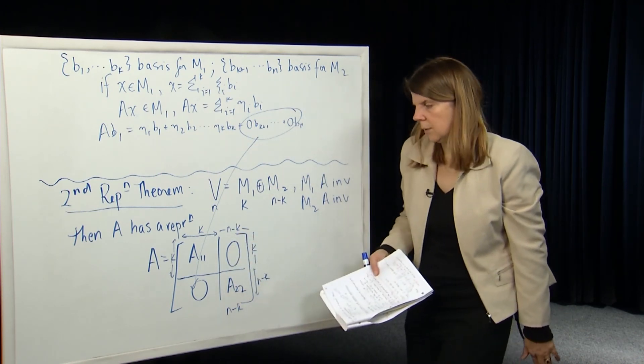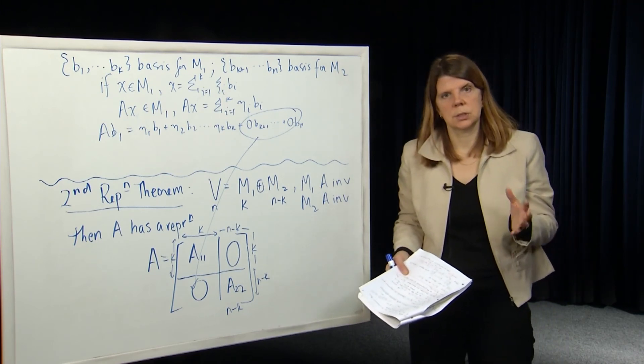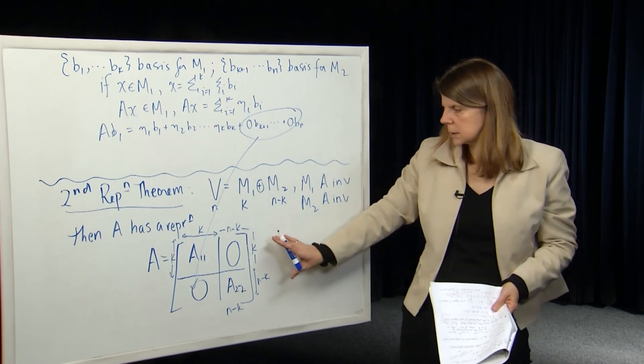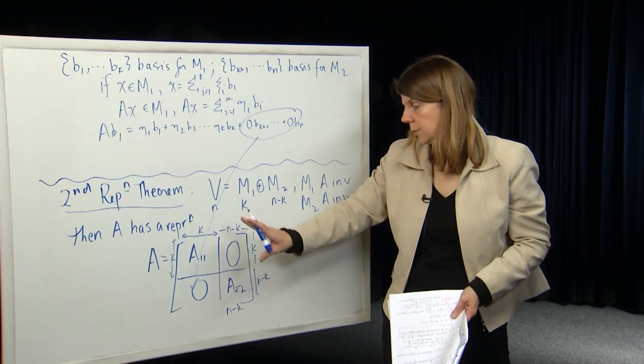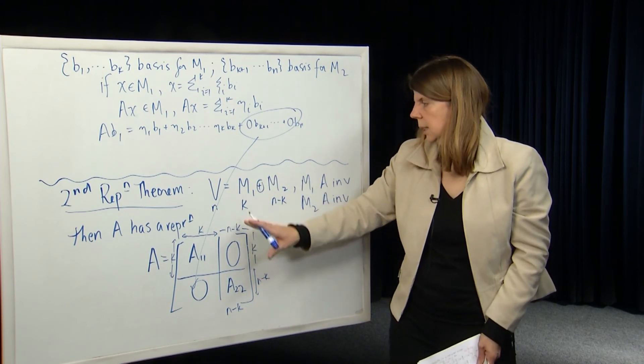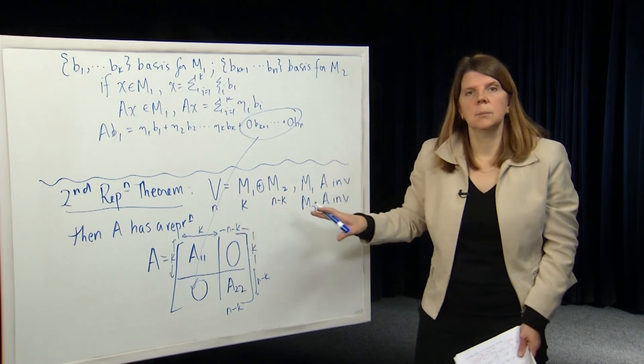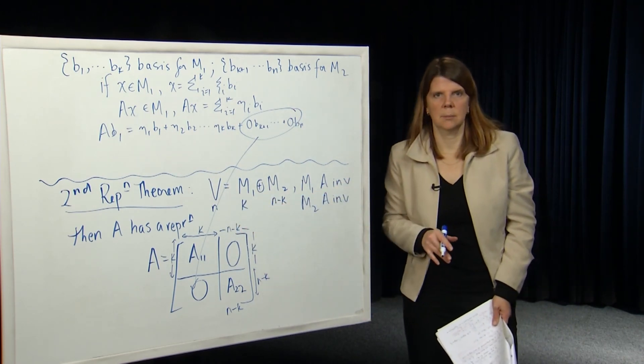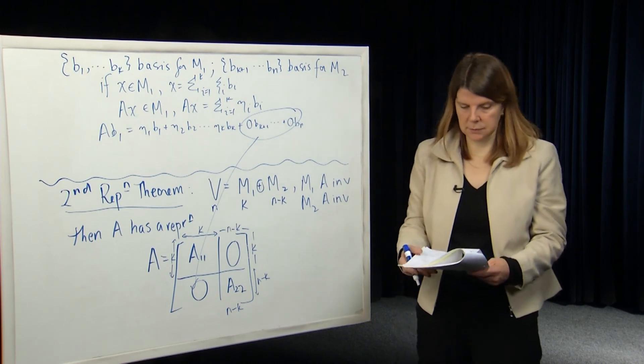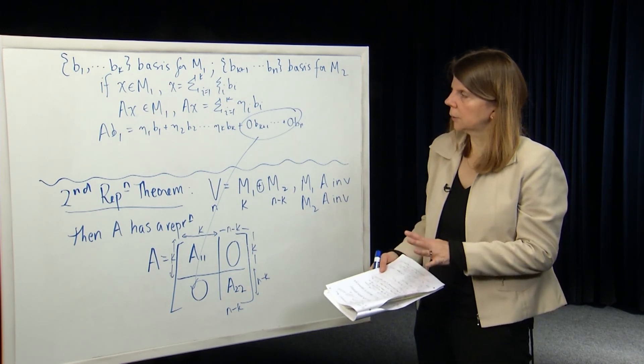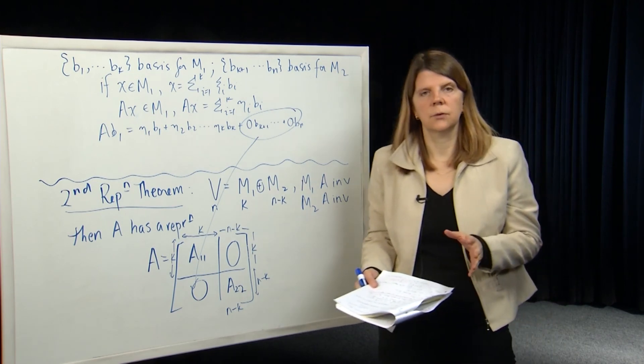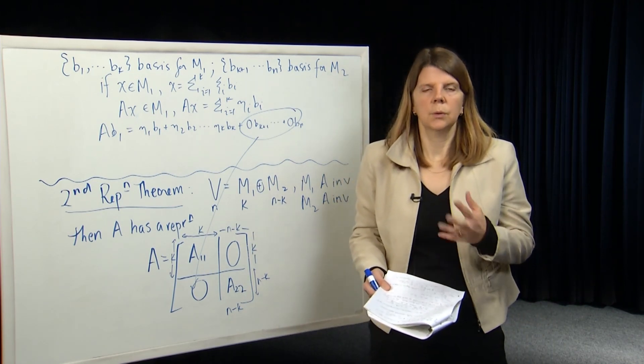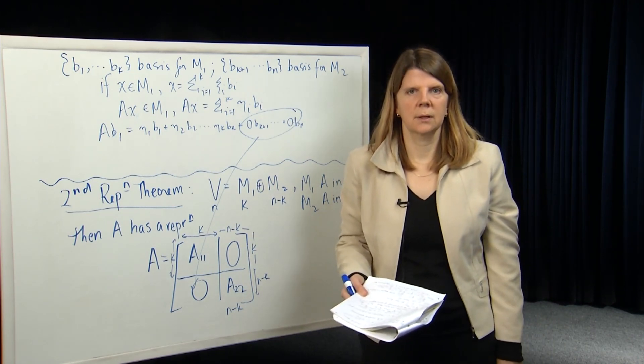So we have a kind of neat result which tells us about what the matrix representation of a linear map or a matrix itself can be in the case in which the vector space can be broken down into the direct sum of A invariant subspaces. So now that we've got that under our belt, we can move on and we can start talking about Jordan form, which we're going to do in the next module. Thanks very much.